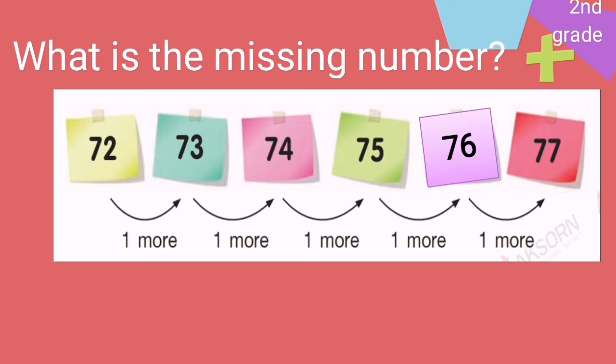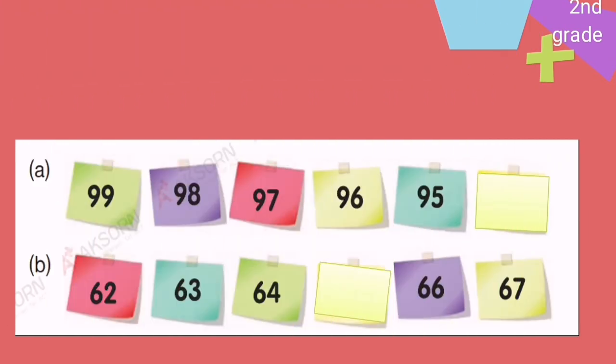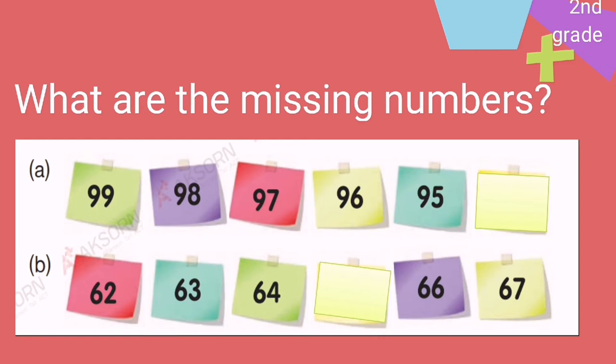So the missing number is 76. Let's have another example — what are the missing numbers? For letter A, we have 99, 98, 97, 96, and 95. You can notice that we subtract one each time. So what will be the answer? 95 minus 1 is...